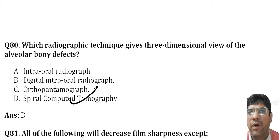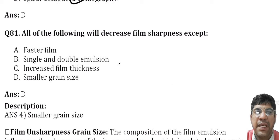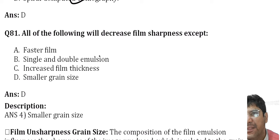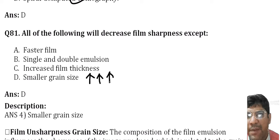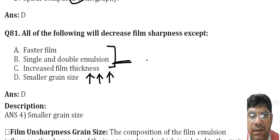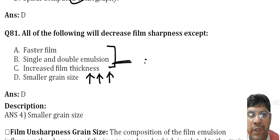All of the following would decrease film sharpness except: smaller grains in the film lead to increased film sharpness. Options A, B, and C can decrease film sharpness. A faster film has a large grain size leading to reduced sharpness, and single and double emulsions can contribute to increased film thickness.